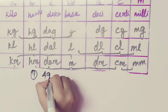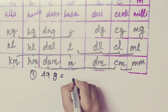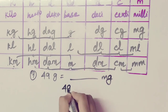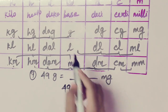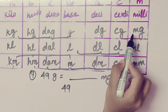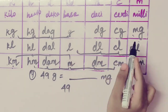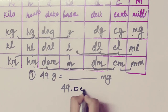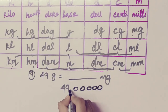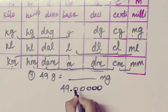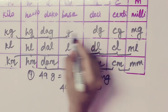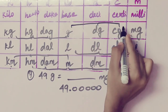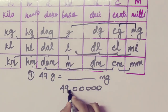Next sum: 49 gram equal to dash milligram. Gram to milligram — move to the right side.